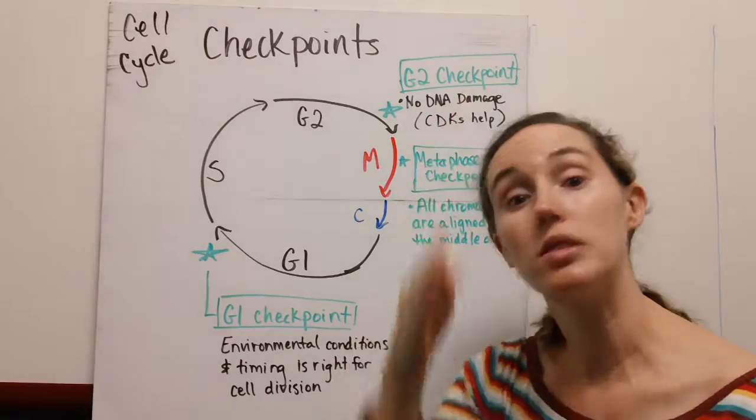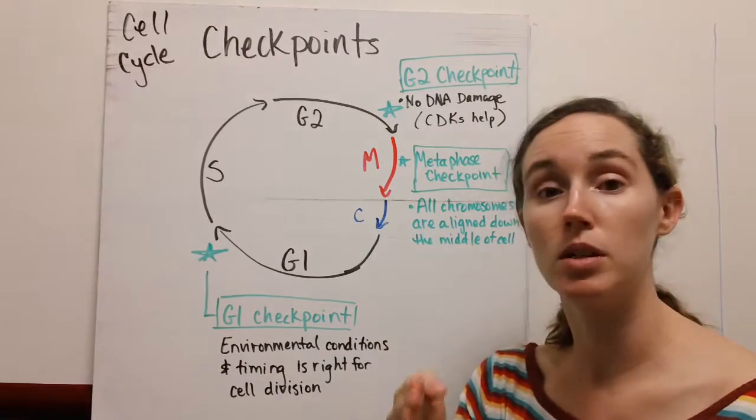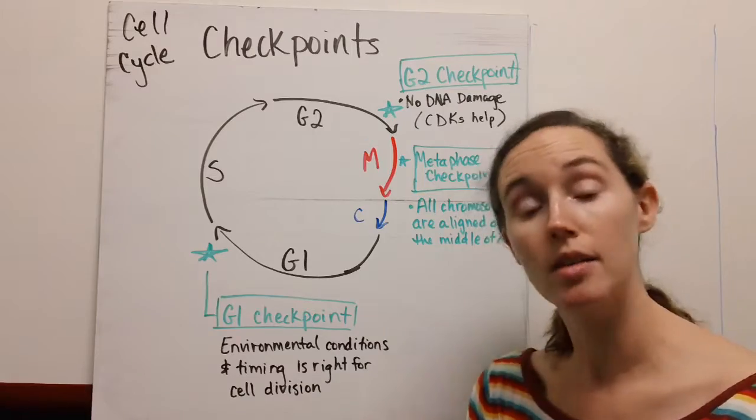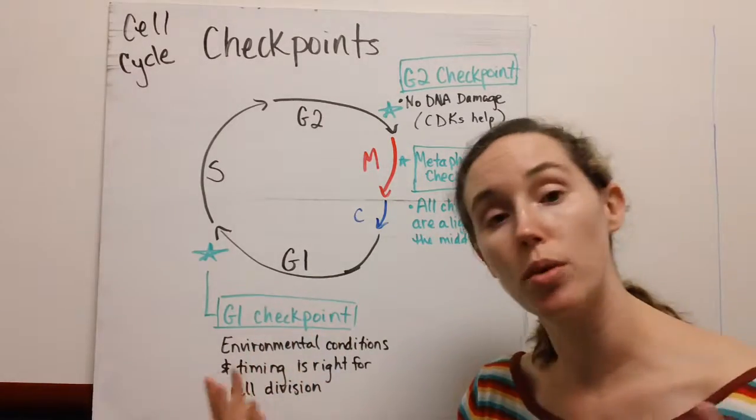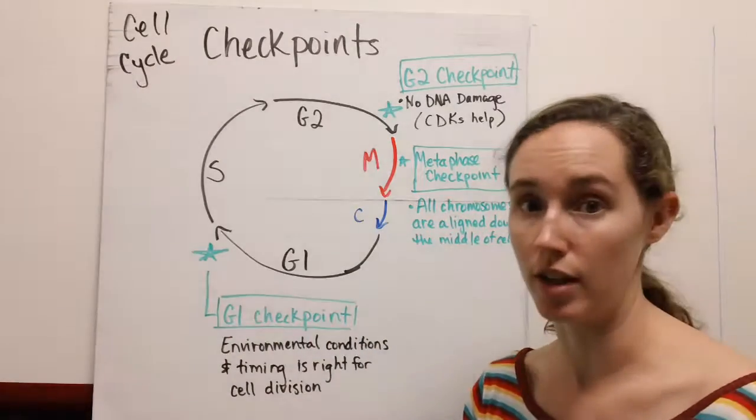Once it sees that they're all lined up down the middle, then that checkpoint is passed, separation occurs, and then cytokinesis. You have two brand new cells that are then going to move into the G1 phase.